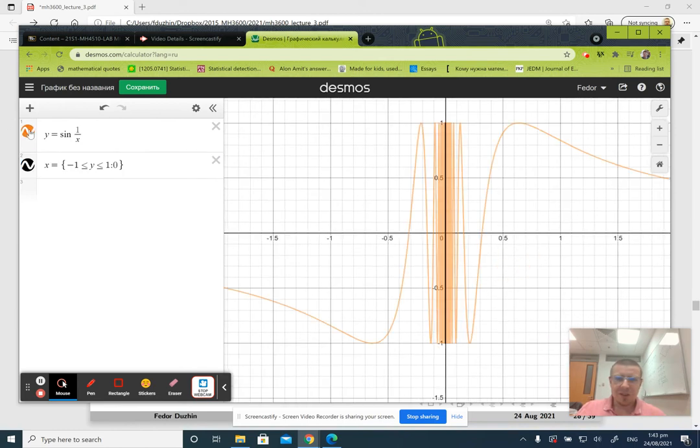This is the function, the graph of the function y equals sine of one over x, and then we take the union. Now I'm not going to prove carefully that this space is not path connected but is connected.